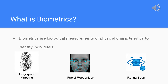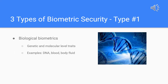There are three main categories of biometric security. The first is biological biometrics, which uses traits at a genetic and molecular level. These may include features like DNA or your blood, which might be assessed through a sample of your body's fluid.